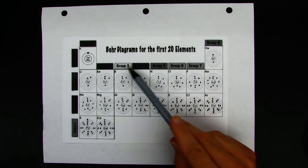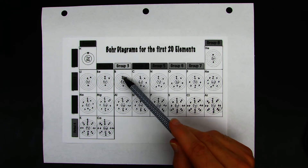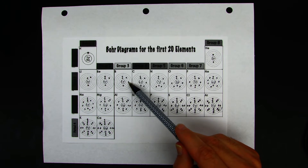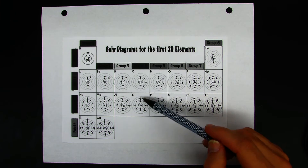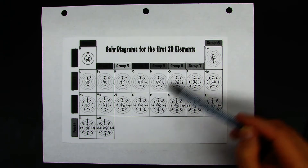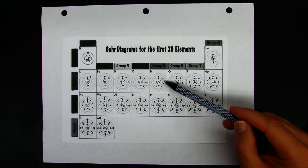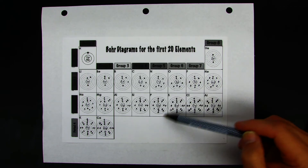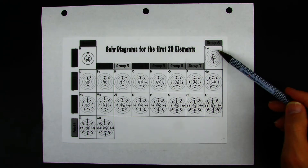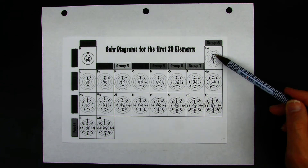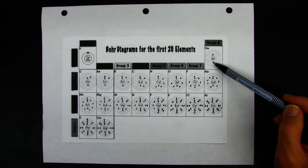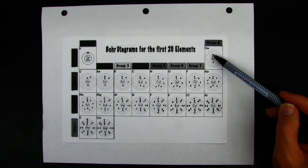You can see that for group three you have three electrons in the outermost shell for boron, and three electrons in the outermost shell for aluminum. For carbon and silicon it's four — you see four here and four here. For group five you can see that they have five electrons in the outermost shell. Group six has six, seven has seven, and group eight has eight electrons in the outermost shell. With the exception of helium — helium only has two electrons, but that's only because that first energy shell can only hold a maximum of two.